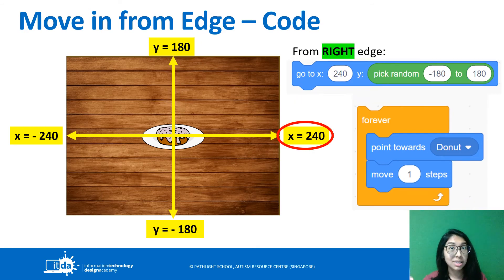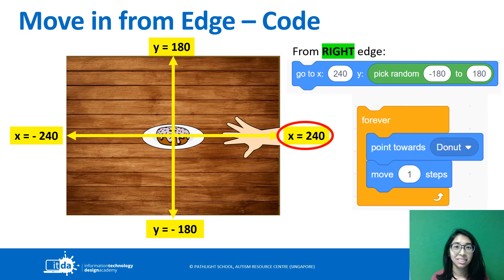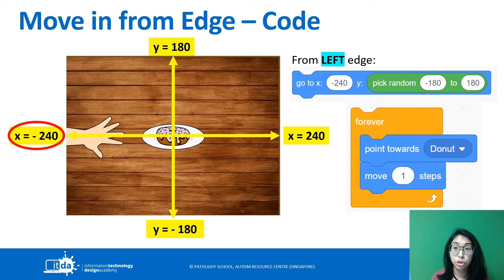From the right side of the screen, for a hand coming in from the right, I fix the right x position to 240, but let the game choose a random up and down y position. For the left side, if it's coming in from the left, we fix the left x position to minus 240, but let the game choose a random up and down y. Then the hand will just move into the donut.